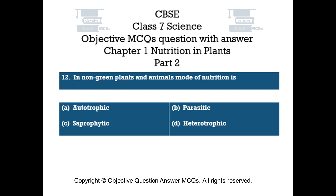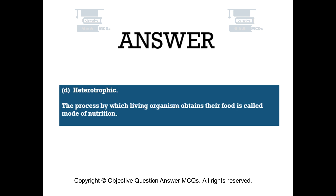Question number 12: In non-green plants and animals, mode of nutrition is. Option A: autotrophic. Option B: parasitic. Option C: saprophytic. Option D: heterotrophic. The right answer is option D — heterotrophic. The process by which living organisms obtain their food is called mode of nutrition.